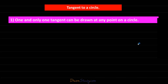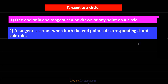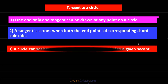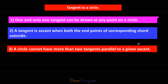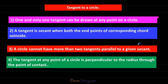We can draw the following conclusions from the activities: one, only one tangent can be drawn at any point on a circle; two, a tangent is a secant when both endpoints of the corresponding chord coincide; three, a circle cannot have more than two tangents parallel to a given secant; four, the tangent at any point of a circle is perpendicular to the radius through the point of contact. In the next session we will see the theorem and the problems related to it. Thank you very much.